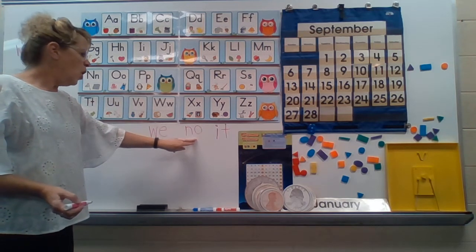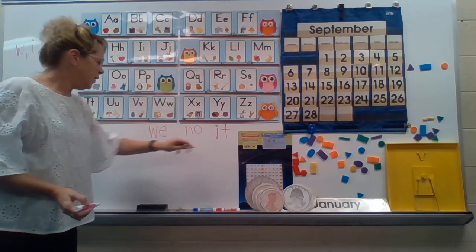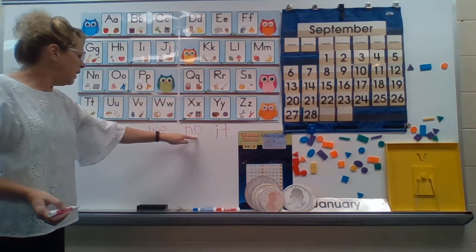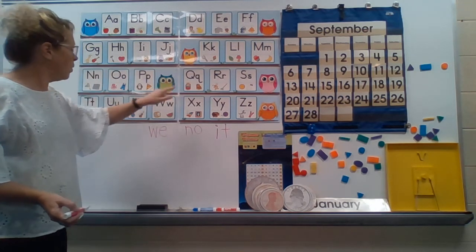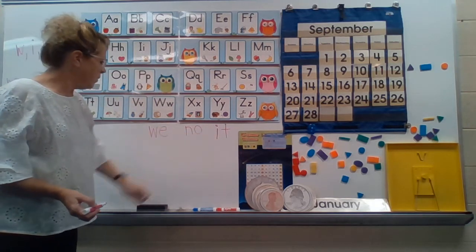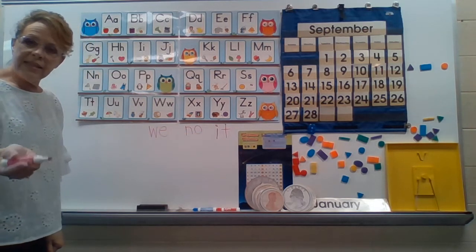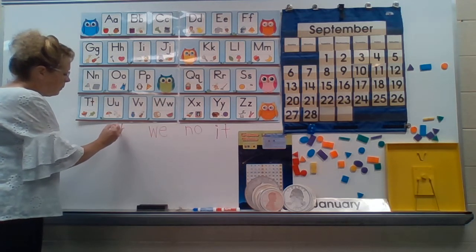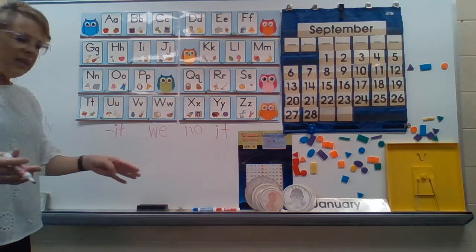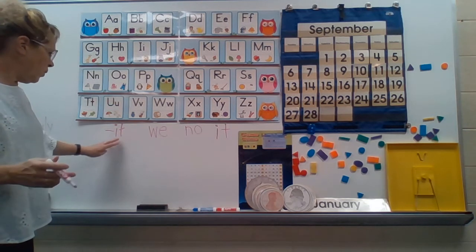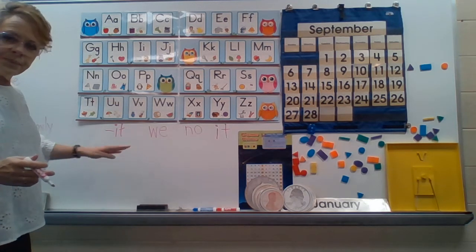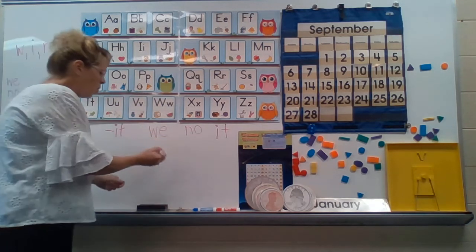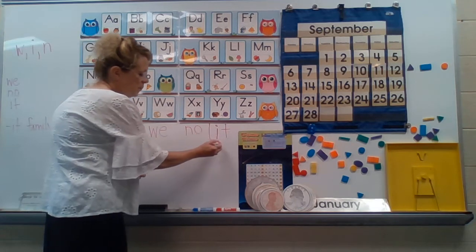So one starts with a W, our letter. N starts with our N letter, and I for it. And then we're going to do the I-T word family. So we're going to make some words today that end with it. So let's see. What could we add to the beginning? Because it is a word on its own, right? It. Now I can add a letter to the beginning of it and make a new word.